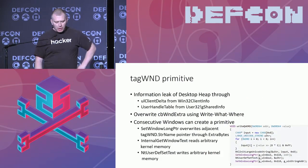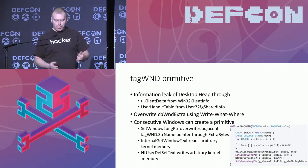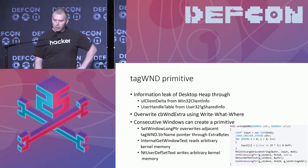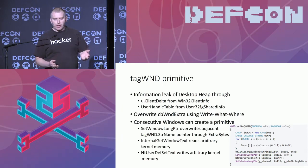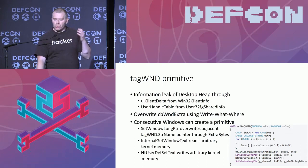Similarly, we can use the window primitive. We leak the address of the window using another table called the user handle table. We overwrite the size of what's called the extra bytes, and then use the SetWindowLongPtr API to change these extra bytes. Since we overwrite the size of the extra bytes, we can actually change the pointer for the string pointer of the window, and this allows us to read or write anywhere in memory using user mode APIs.